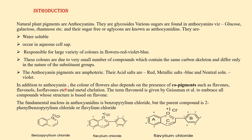In addition to anthocyanin, the color of flowers also depends on the presence of co-pigments such as flavones, flavonols, isoflavones, etc., and metal chelation. The term flavonoid is given by Geissman et al. to embrace all compounds whose structure is based on flavone. The fundamental nucleus in anthocyanin is benzopyrylium chloride, but the parent compound is 2-phenylbenzopyrylium chloride or flavylium chloride.